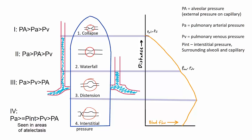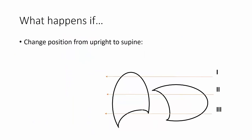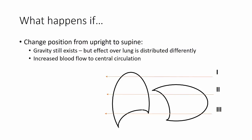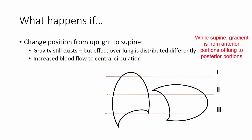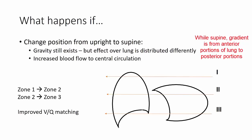Those are the basic four zones of the lung. Now let's apply these concepts to patients in different conditions. What happens if the patient changes position from upright to supine? Gravity still exists, but its effect over the lung is distributed differently — now from anterior to posterior rather than apex to base. With this position change, there is also increased blood flow to the central circulation as blood flow to the legs decreases. Overall, this results in a shift from zone one to zone two and zone two to zone three, improving VQ matching within the lung.